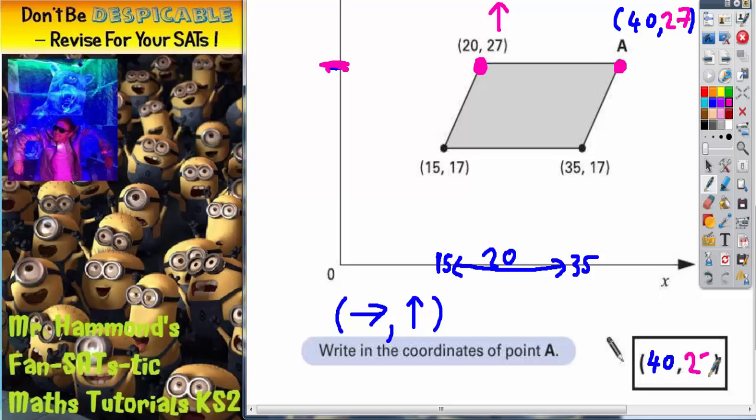Just to recap, the first part of the coordinate has got to be 40 because the gap from 15 to 35 is 20, so we need the same gap here. 20 plus 20 gives us the 40, so that's the first part of the coordinate. The second part has got to be 27 because it's the same distance up with this coordinate here, and this coordinate is 27 up.